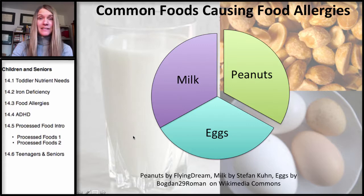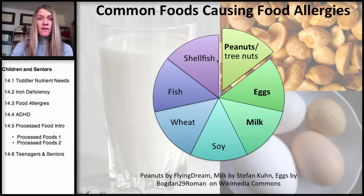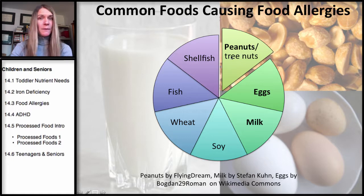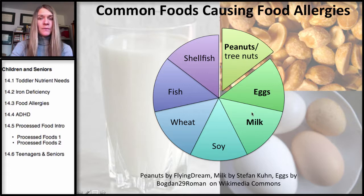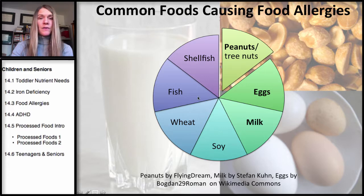There are actually eight foods which cause 90% of all food allergies: peanuts, which is actually a legume, and then tree nuts such as walnut or cashew, eggs and milk, and then soy, wheat, fish, and shellfish.